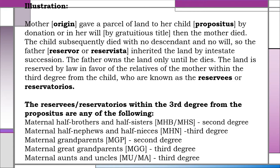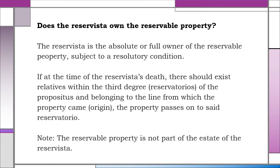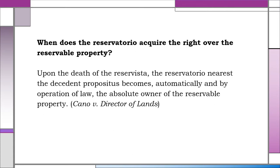The reservatorio closest to the propositus excludes all other relatives. Does the reservista own the reservable property? The reservista is the absolute or full owner of the reservable property subject to a resolutory condition. If at the time of the reservista's death there exist relatives within the third degree of the propositus belonging to the line from which the property came, the property passes to said reservatorio. Note that the reservable property is not part of the estate of the reservista. Upon the death of the reservista, the reservatorio nearest to the propositus becomes automatically and by operation of law the absolute owner of the reservable property.